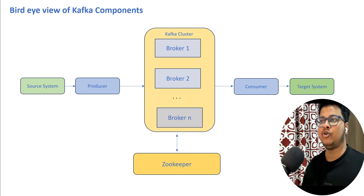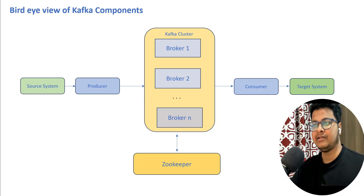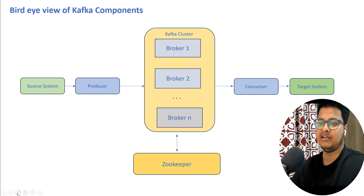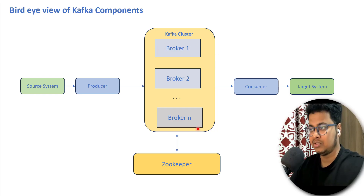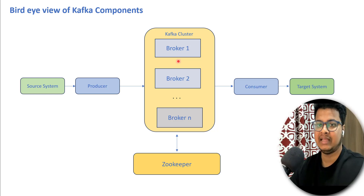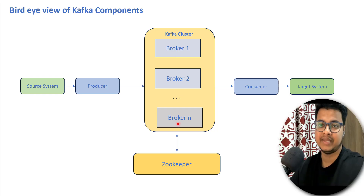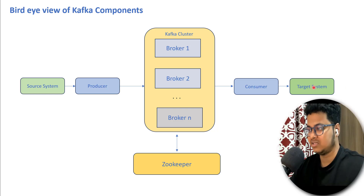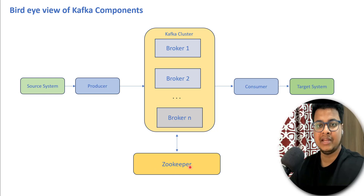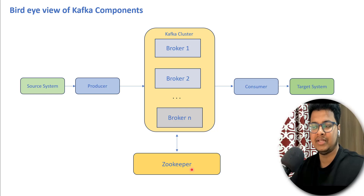This is the bird's eye view of all the Kafka components. I'll be explaining the details of each component. You have a source system which sends data using the producer API, which produces all your data to your Kafka cluster. A Kafka cluster can have different brokers — think of each broker as a machine in that cluster, which is why it's called a distributed cluster. There is also a consumer API used by a target system to consume data from the Kafka cluster and store it. We'll explain zookeeper in detail — it is used for coordination and we'll talk about its responsibilities in Kafka.